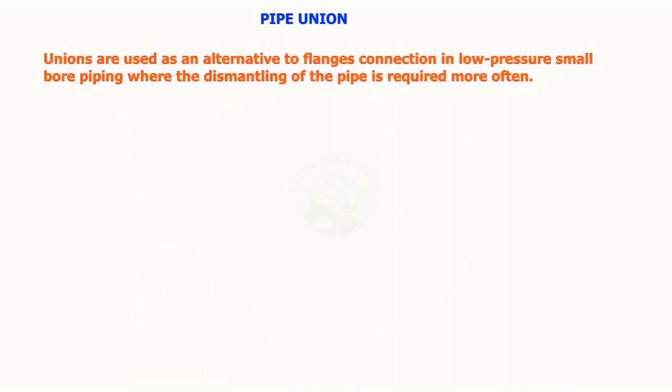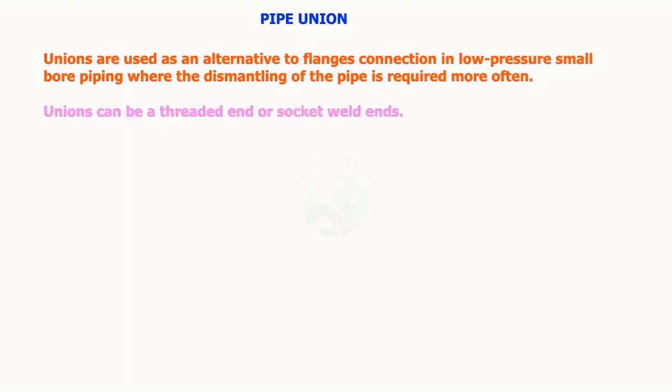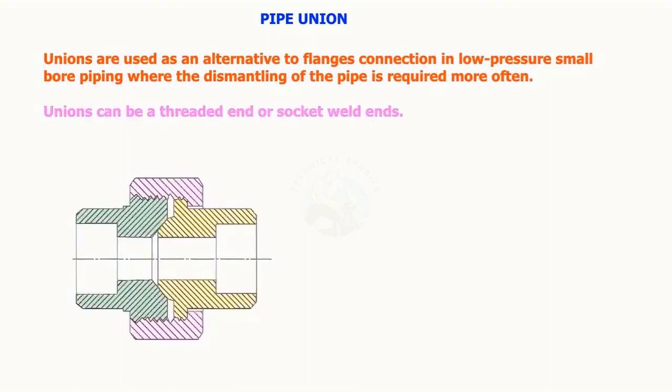Pipe unions are used as an alternative to flange connections in low pressure, small bore piping where the dismantling of the pipe is required more often. Pipe unions can be threaded end or socket weld end.